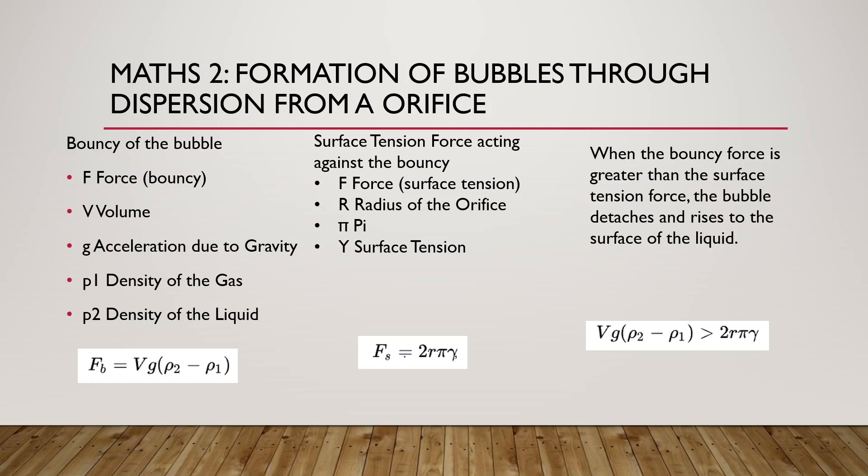One force acting against the buoyancy is the surface tension force. When the buoyancy force of the bubble is greater than the surface tension force, the bubble detaches itself from the orifice and rises to the surface where it generates foam.